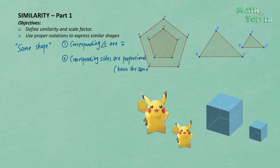If the two figures meet these two conditions, then we say the two figures are similar. This relationship is a vice versa: if you are given that two figures are similar, then the corresponding angles are congruent and the corresponding sides are proportional.